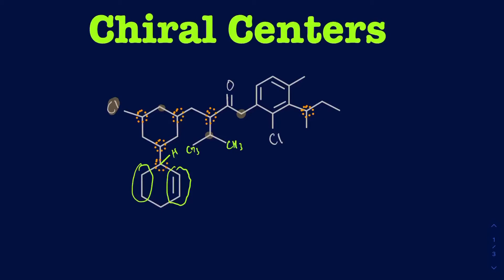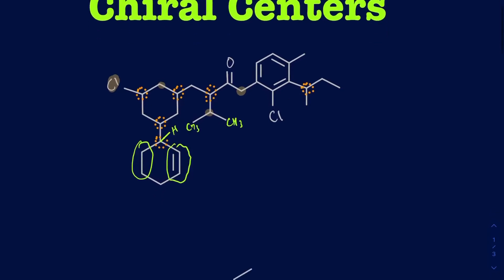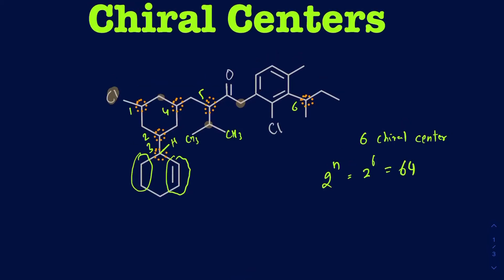Let's go ahead and figure out the total. I count 1, 2, 3, 4, 5, 6 — so I have a total of six chiral centers. If I want to figure out the total number of stereoisomers, I'll do 2 to the power of n, where n is the number of chiral centers, so 2 to the power of 6. That's going to be 64, so you're going to have a total of 64 stereoisomers.